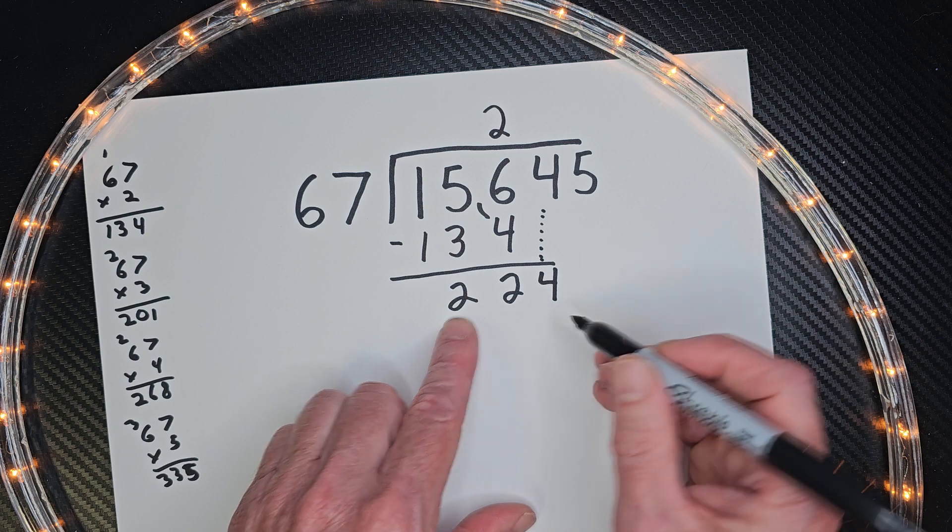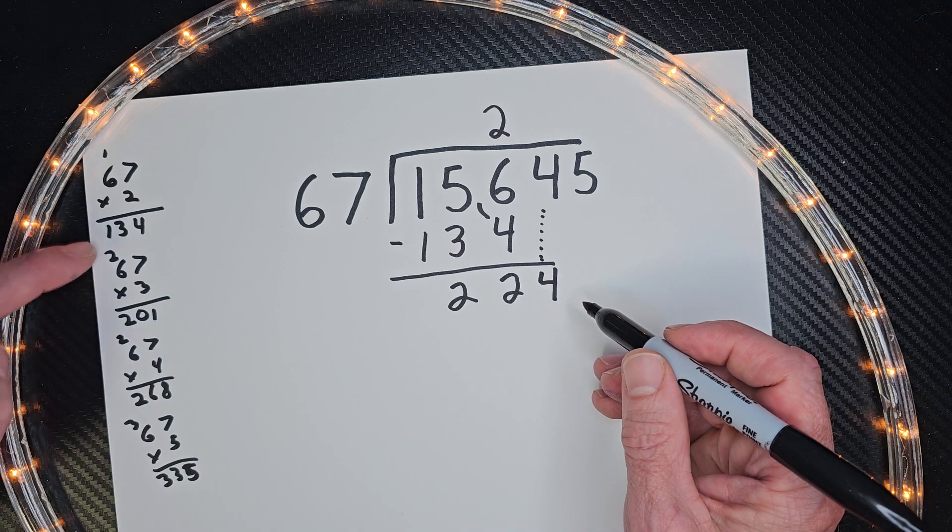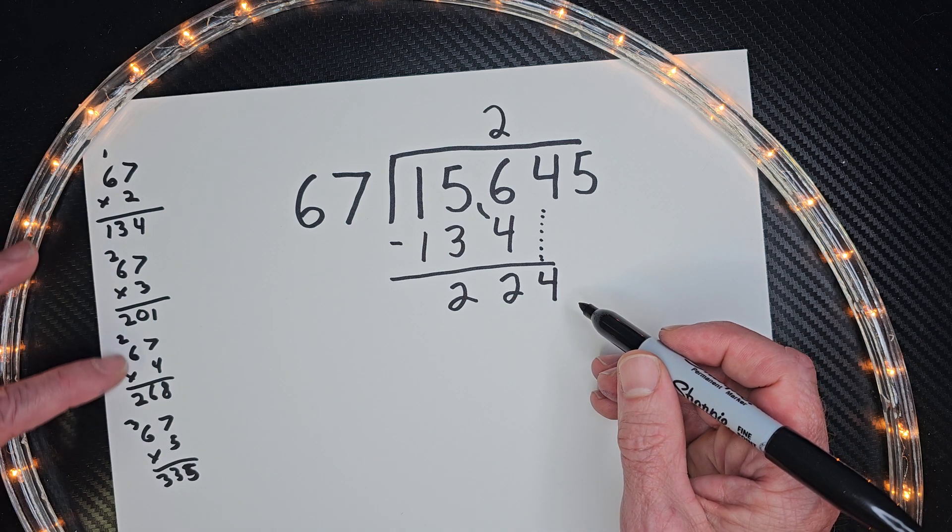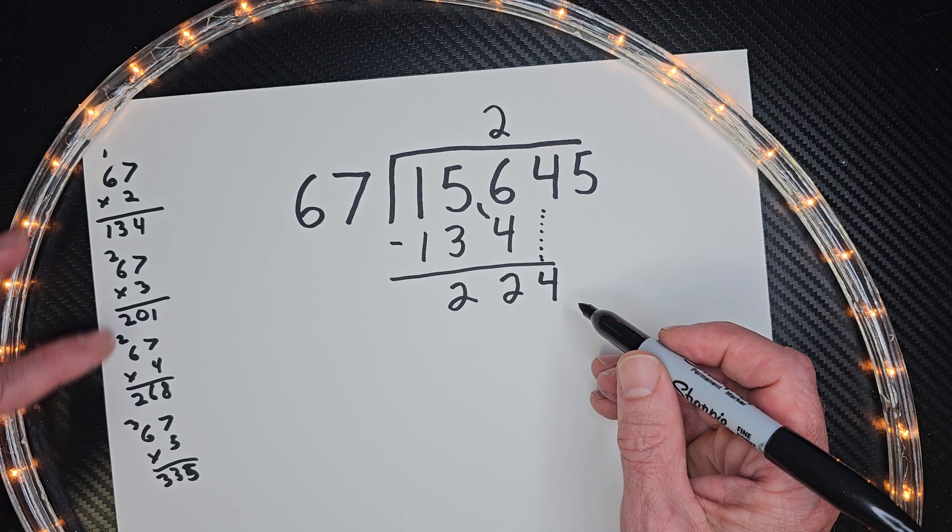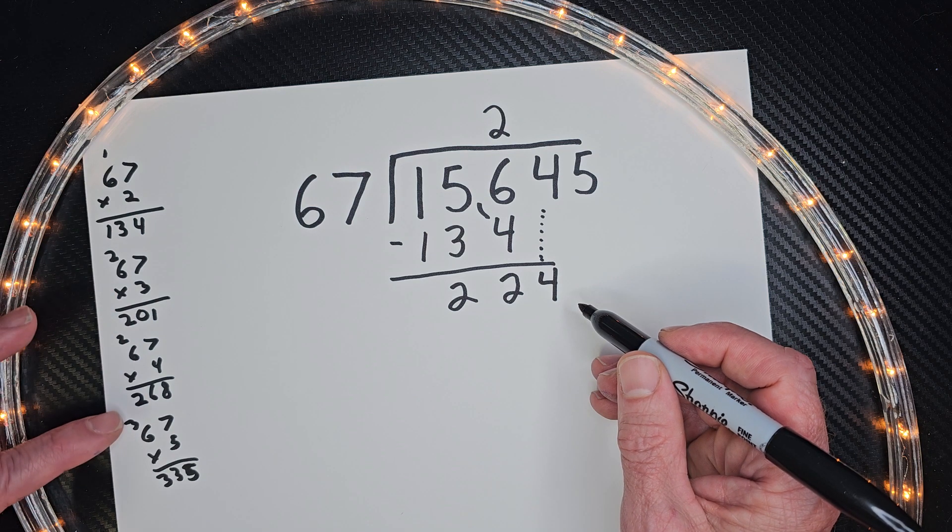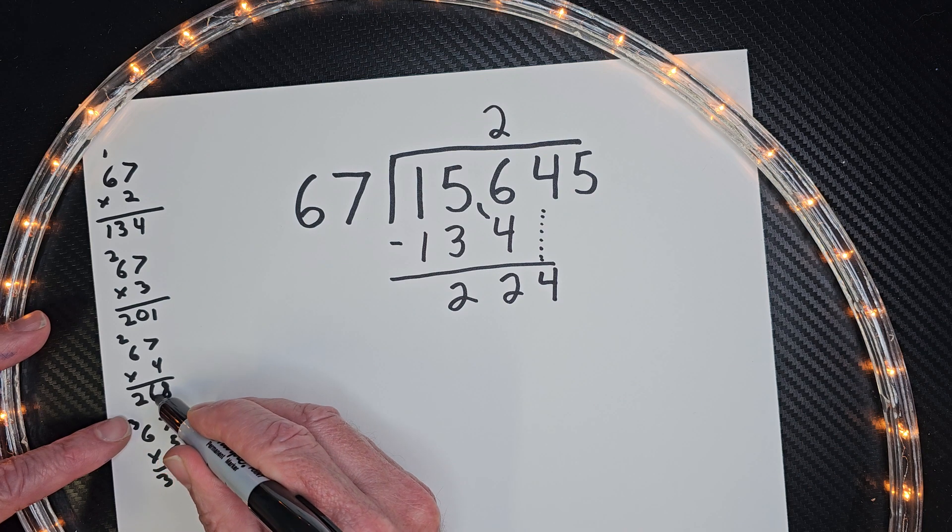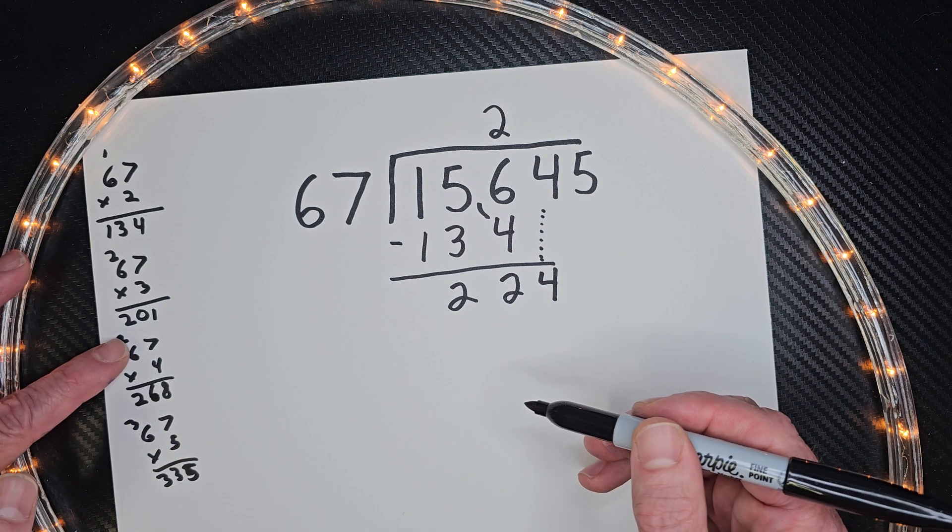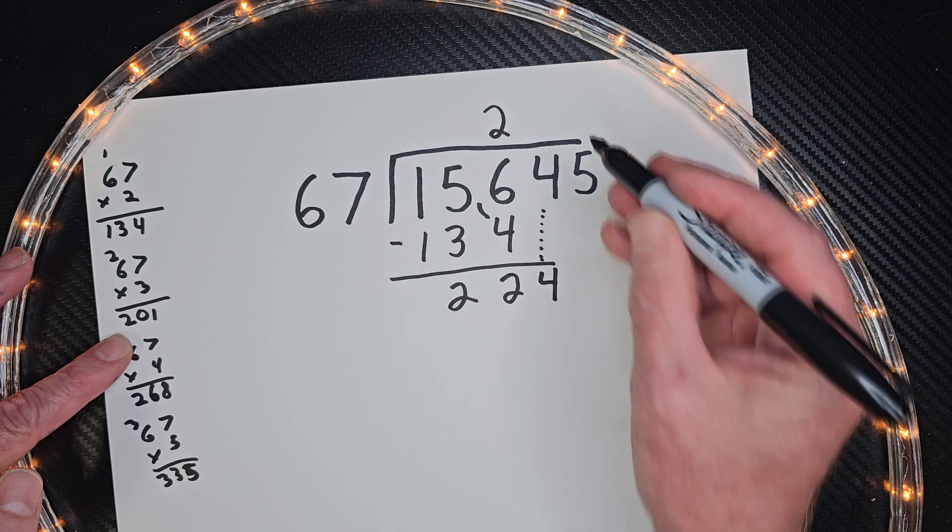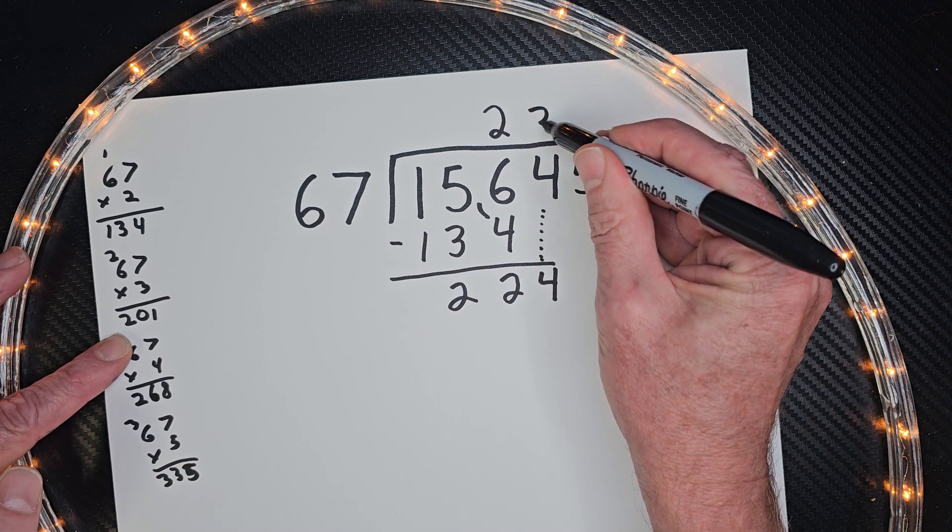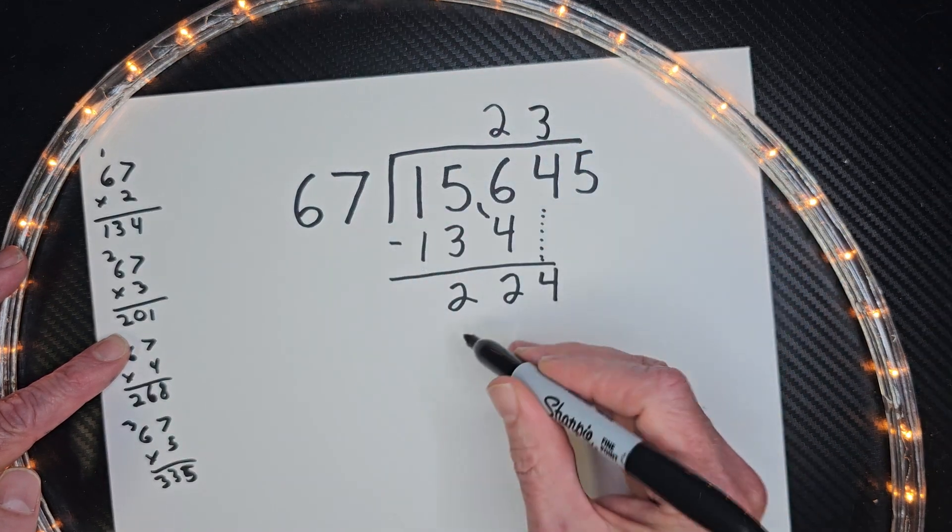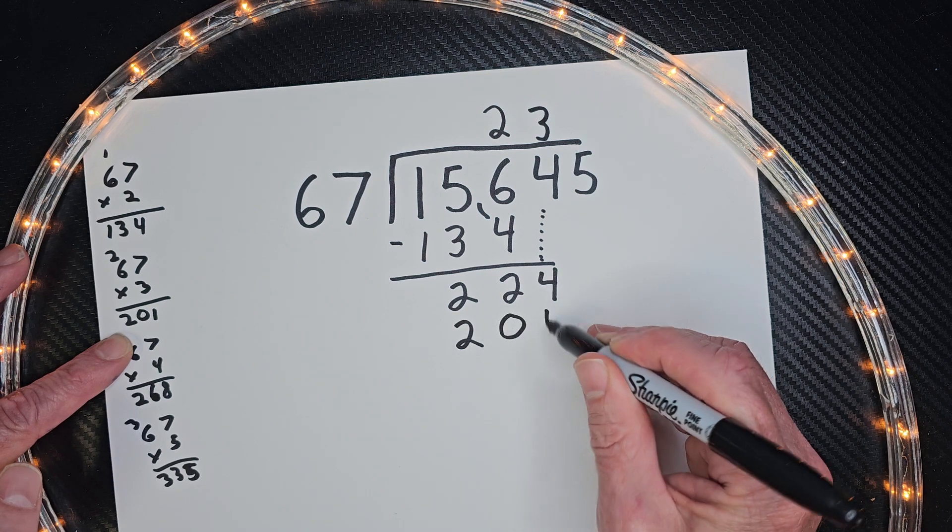And now I have 224. See how easy it is? I'm just looking over here to see if there's a number that matches close to 224. It looks like we're going to use 3. So let's use 3. 3 times 67 would be 201. Just like this.